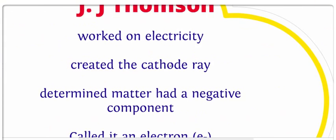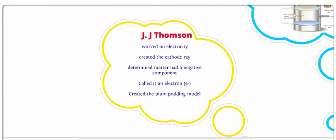And he found that when he brought a magnet near this ray, the beam would bend towards the positive end of the magnet and pass away from the negative end. So he said, well, this beam must be negatively charged then. So he determined that all matter, or he theorized that all matter must have some sort of negative component, which he called an electron.